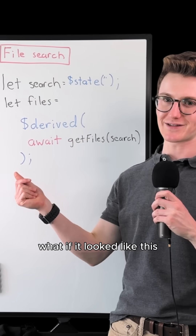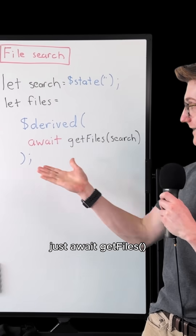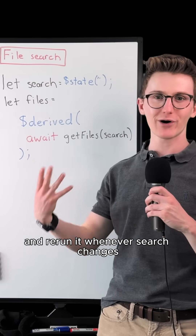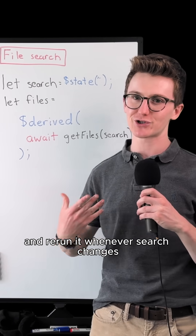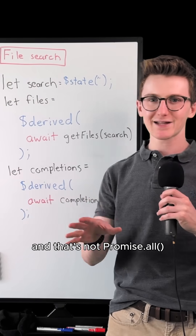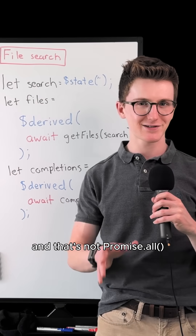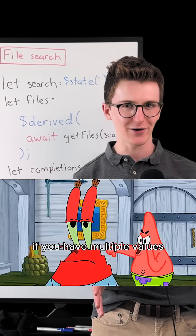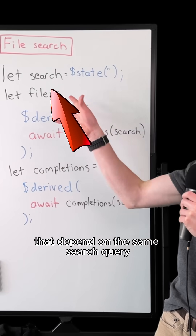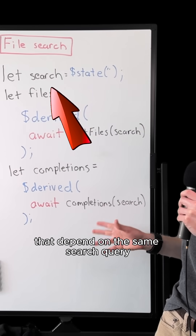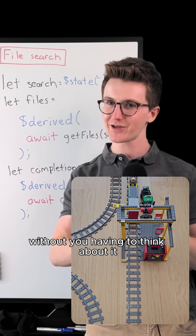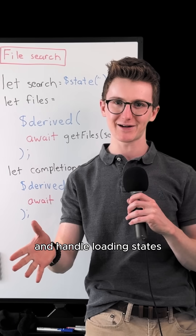What if it looked like this? Just await get files, and rerun it whenever search changes by using derived. Simply. And that's not promise.all — if you have multiple values that depend on the same search query, they'll rerun in parallel, without you having to think about it.